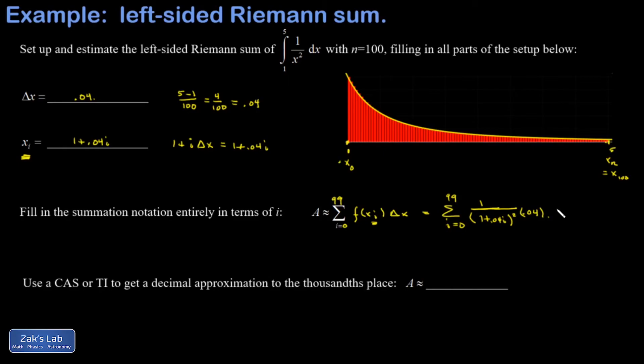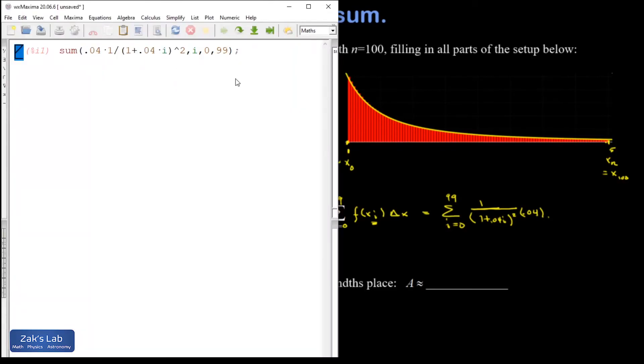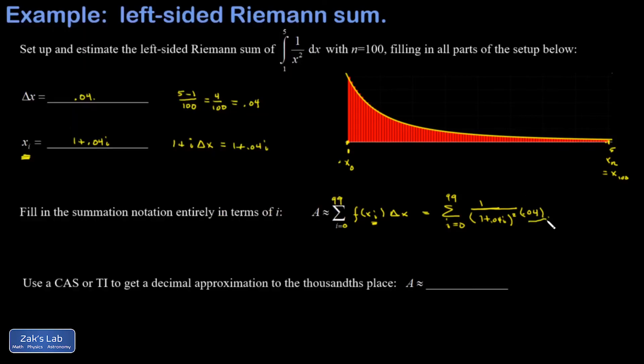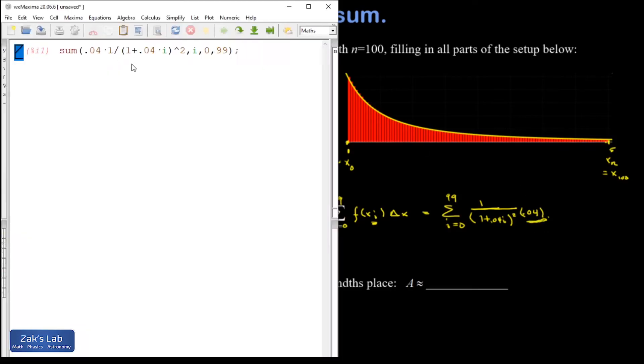So I opted to use Maxima for this. Let's pop up Maxima real quick. Okay, here we are in Maxima, and I've typed in sum of 0.04 times 1 over the quantity 1 plus 0.04i all squared as i goes from 0 to 99. It all looks good. I hit shift enter, and I get an area approximation of 0.819.